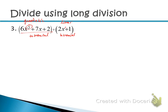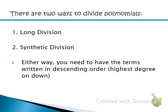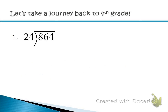We added, subtracted, and multiplied polynomials before in Algebra 1. Now we've got to talk about how to divide them. A reminder that we have to have our terms written in descending order — start with the highest degree term and go in descending order. We have to be able to see all the terms, and if we can't, we fill them in with zeros.